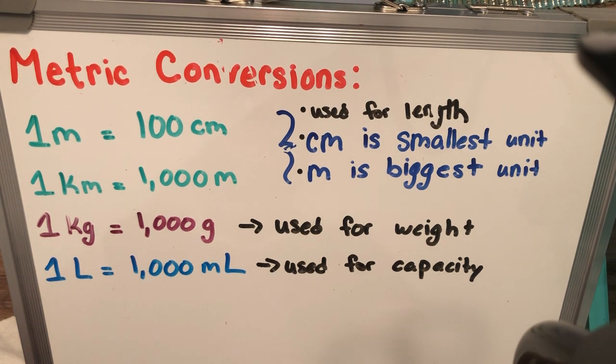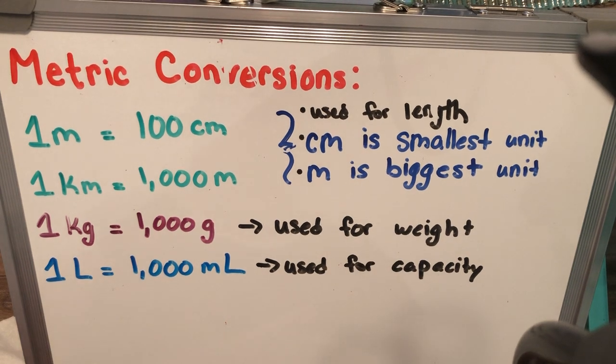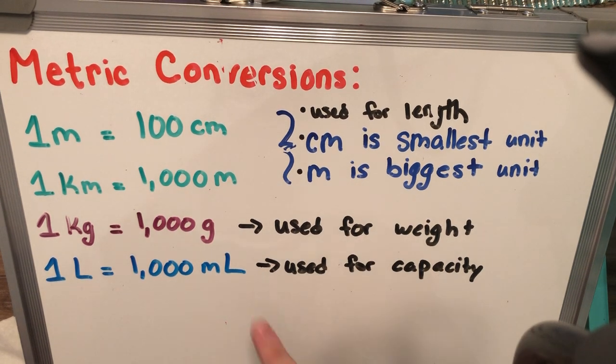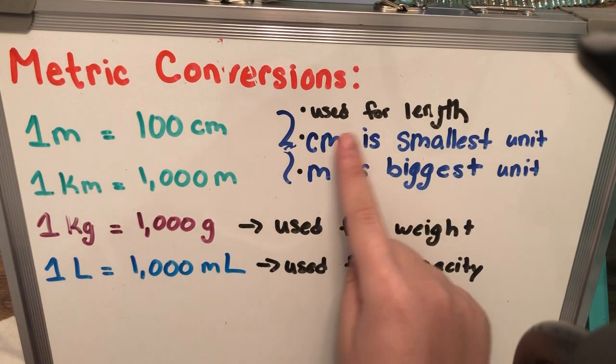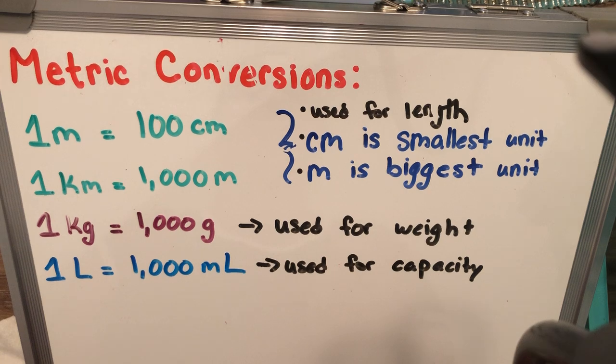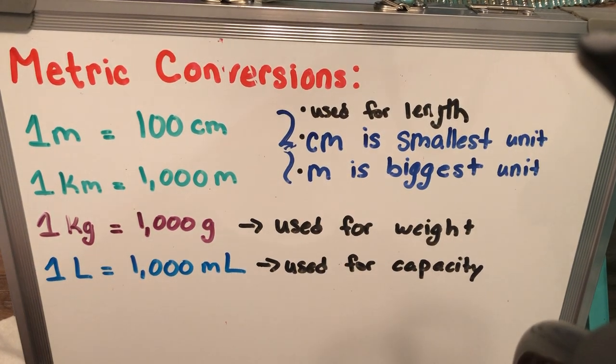Okay, pause the video, take down the notes if needed. Otherwise, we're just going to keep moving on. I kind of just showed you that we use kilometers, centimeters, and meters is used for length to measure something. And centimeters is the smallest unit we've talked about, and meters is our biggest unit.